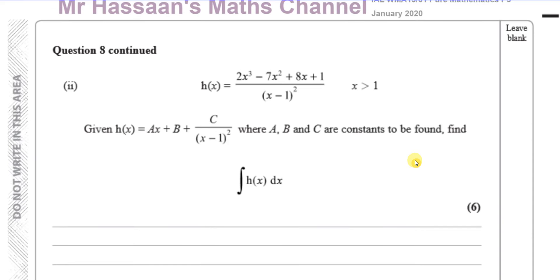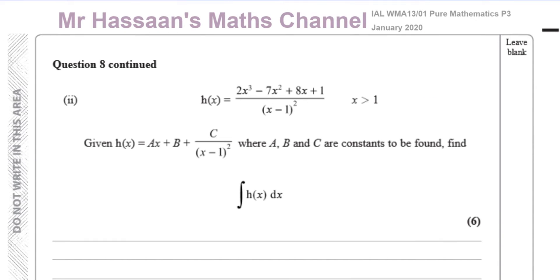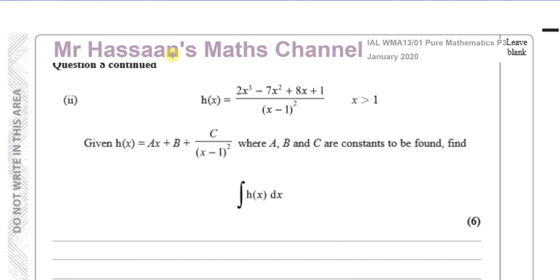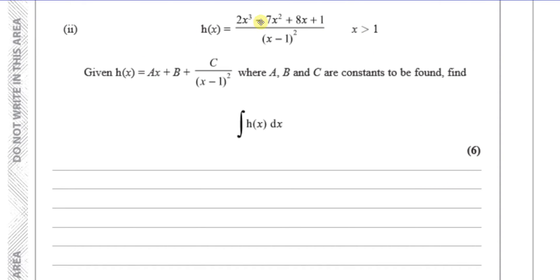Part 2 says that the function h(x) is given by a polynomial over a polynomial — an algebraic fraction. Given that h(x) equals ax plus b plus c over x minus 1 squared, where a, b, and c are constants to be found, we need to find the integral of h(x). So we have to rewrite h(x) in this form and then integrate it. There are numerous methods we could use.